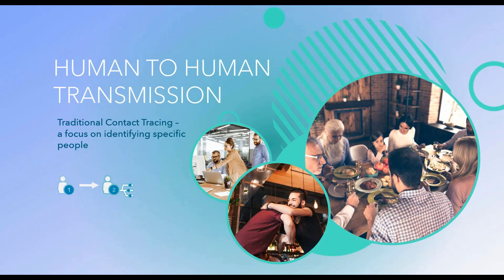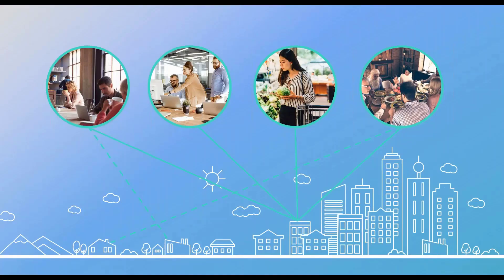We tend to use traditional contact tracing methods in the earliest stages of outbreaks when human-to-human transmission is occurring in a relatively limited way. In this approach, the workflow helps to identify specific people who've been in contact with a confirmed case. With this information, we can trace the infection back to a family member, a friend, or a co-worker. The case can then isolate for the duration of their infectious period, and any identified contacts can quarantine — a powerful intervention that breaks transmission chains and stops outbreaks while they can still be contained.